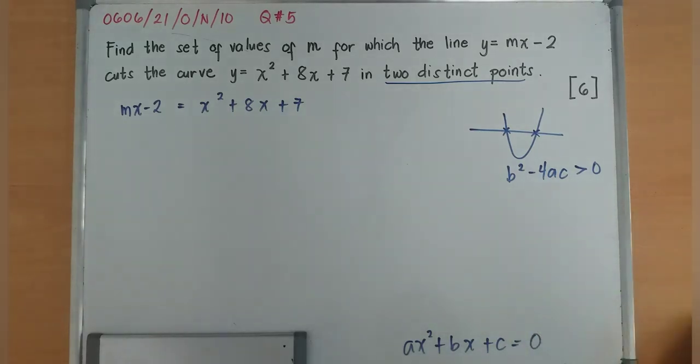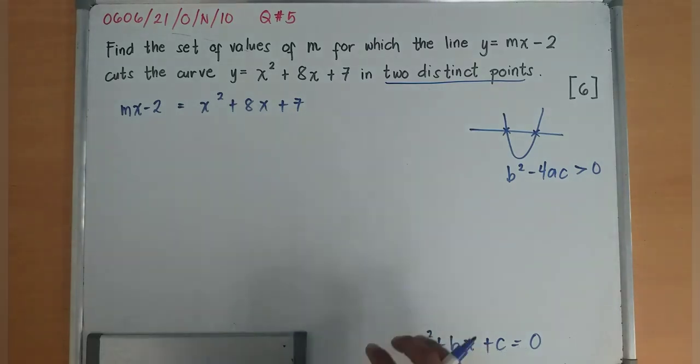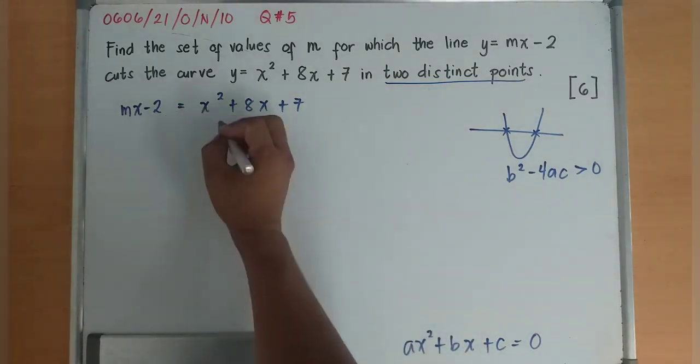I need to equate this equation with 0. So I'll have now x squared, so 0 = x² + 8x - mx + 7 + 2.